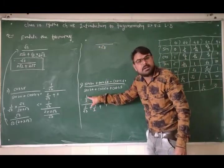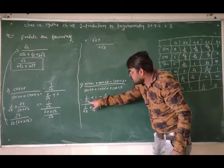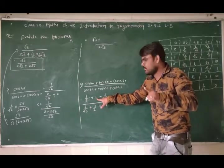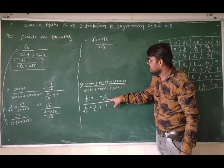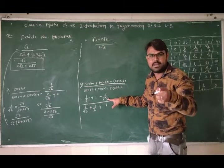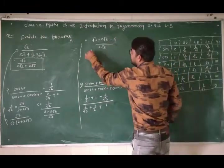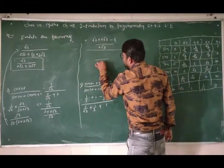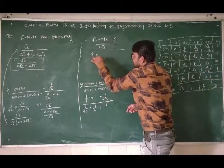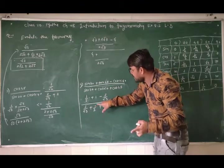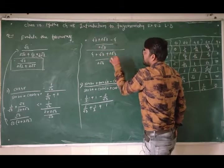Plus: 1/2 के नीचे 2 है — तो √3 multiply करेगा → √3. Plus: 1 के नीचे कुछ नहीं — तो 2√3 multiply करेगा → 2√3. LCM cancel हो गया। अब like terms का addition करते हैं: root वाला portion equal होना चाहिए। यहाँ √3 है और यहाँ भी √3 है — तो addition होगा: 2√3 + √3 = 3√3. Minus 4 — numerator: 3√3 − 4. Denominator: 4 + √3 + 2√3 = 4 + 3√3.